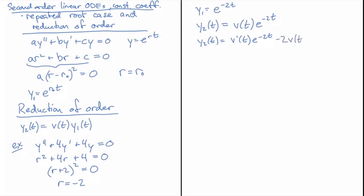Then v(t), we're not touching that on the second part of the product rule, and then we multiply by e^(-2t). So that's y₂ prime.